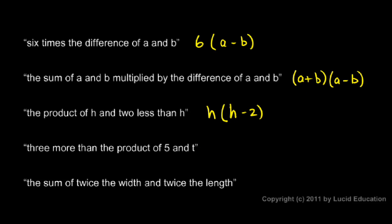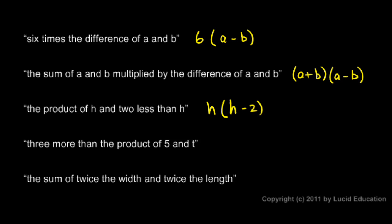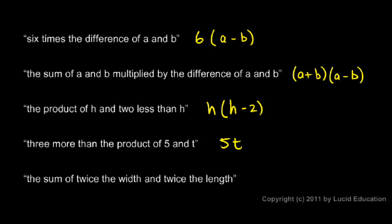A couple more here. Three more than the product of five and t. Three more than — we know we're going to be adding three, but adding it to what? To this: the product of five and t. So let's write the product of five and t first — we can write that as five times t — and we have three more than that, so we put a plus three: five t plus three.